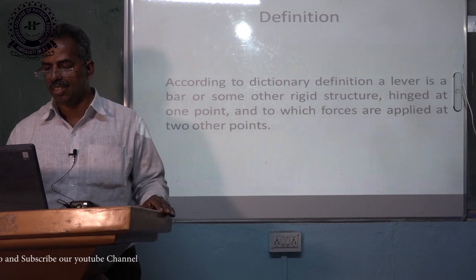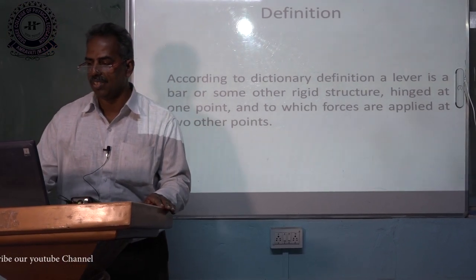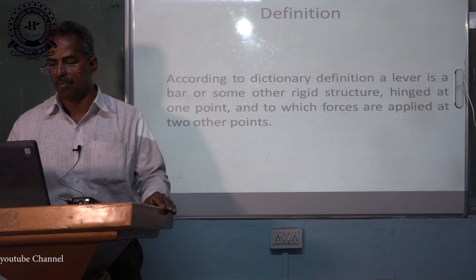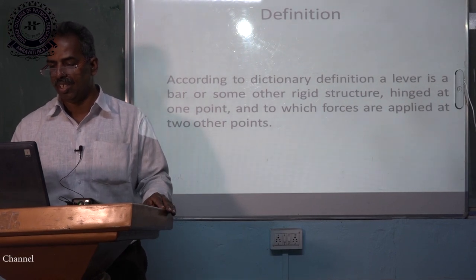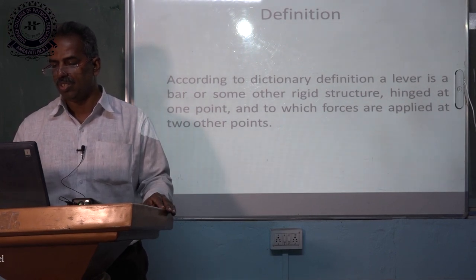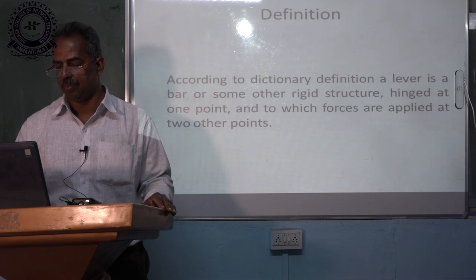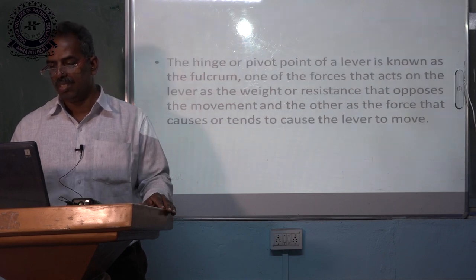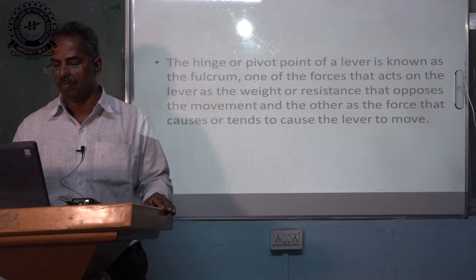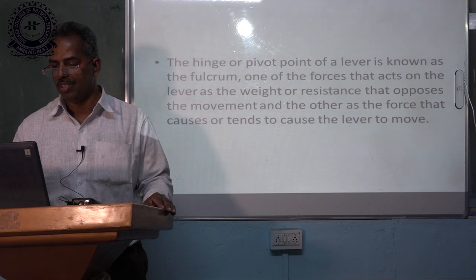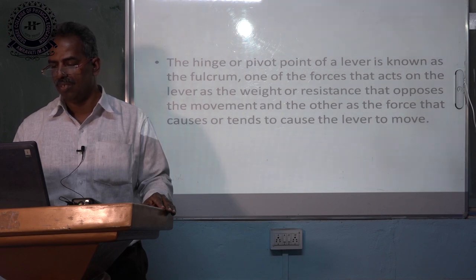Next is the definition. According to the dictionary definition, a lever is a bar or some other rigid structure hinged at one point and to which forces are applied at two other points. A hinge or pivot point of a lever is known as the fulcrum. One of the forces that acts on the lever is the weight or resistance that opposes the movement, and the other is the force that causes or tends to cause the lever to move.